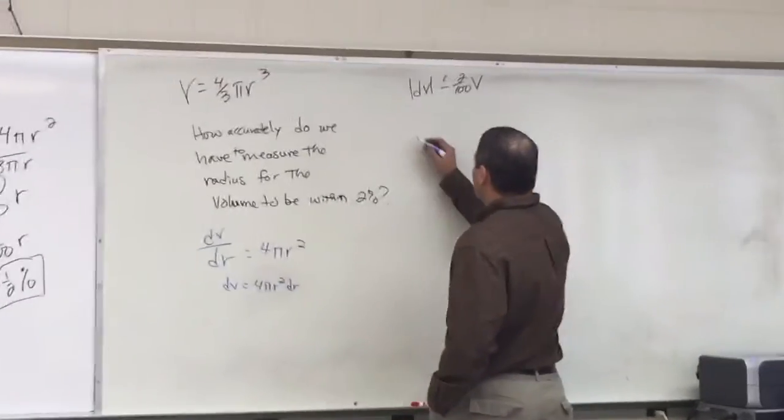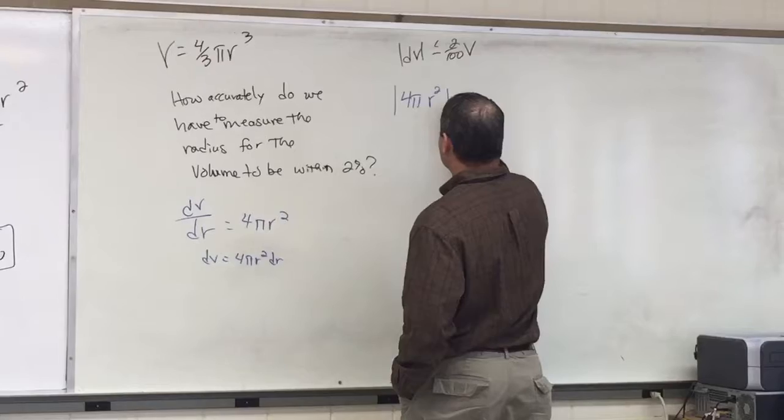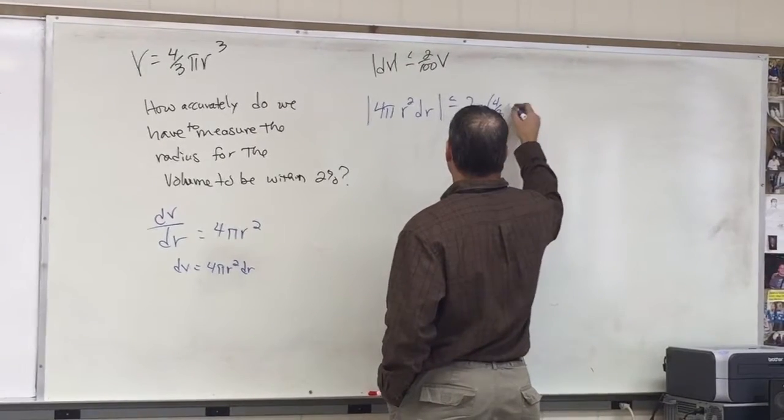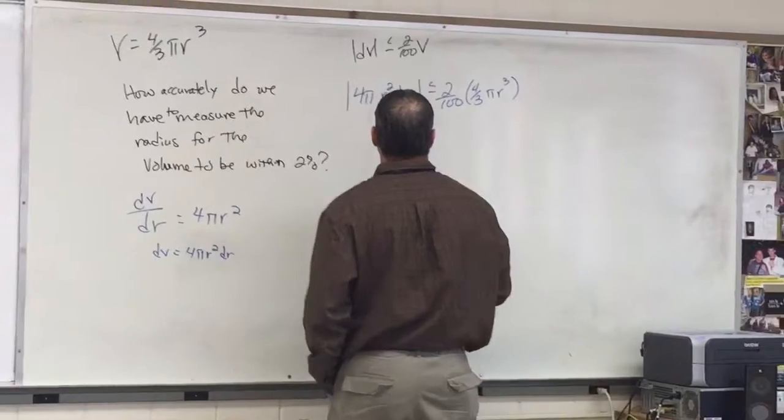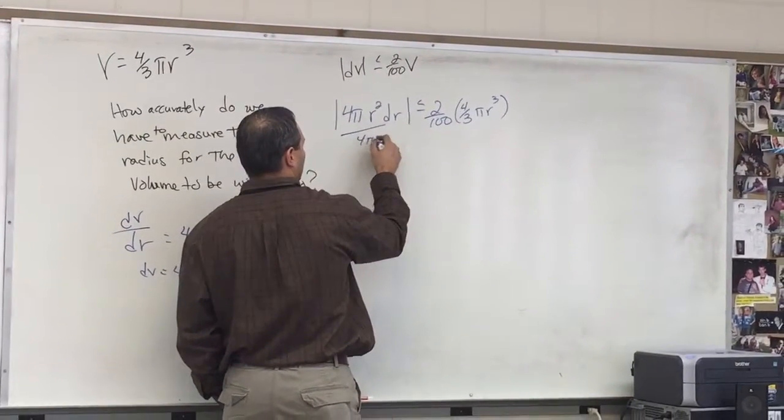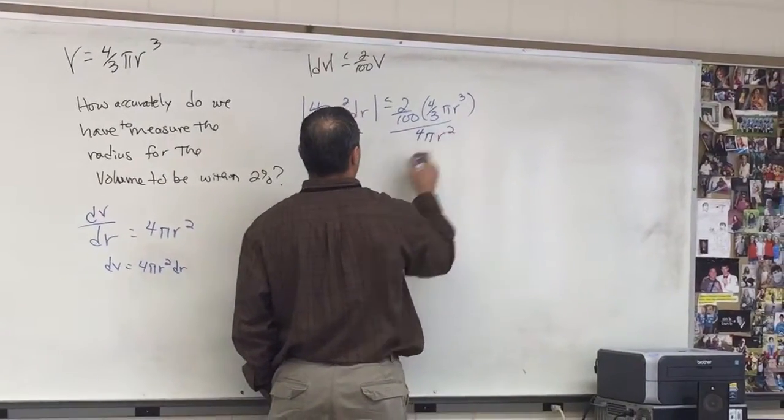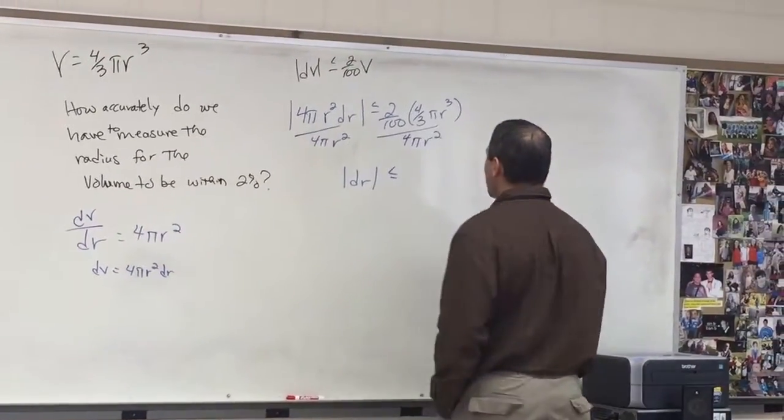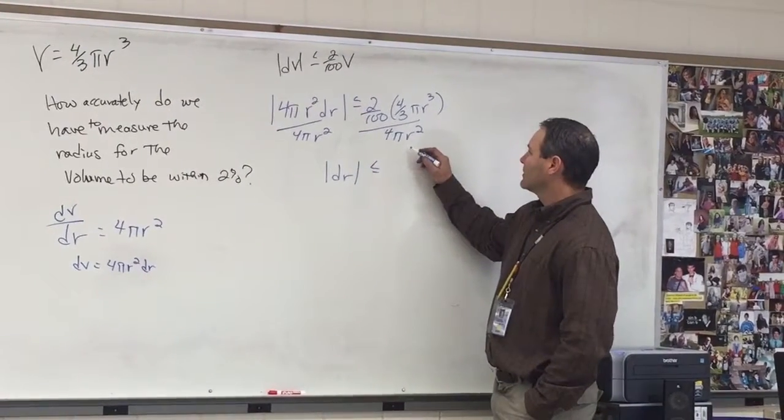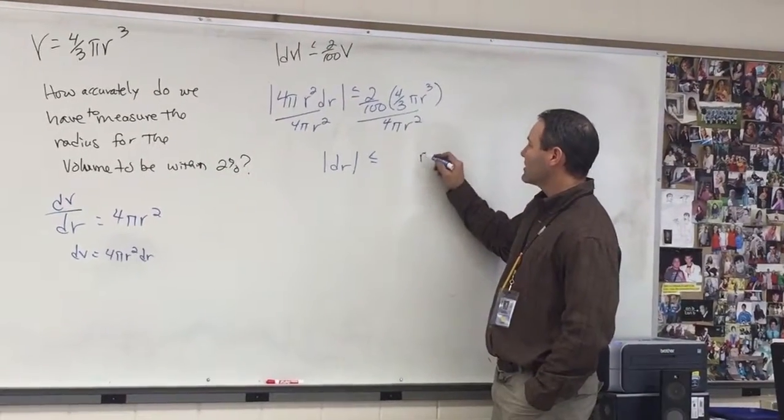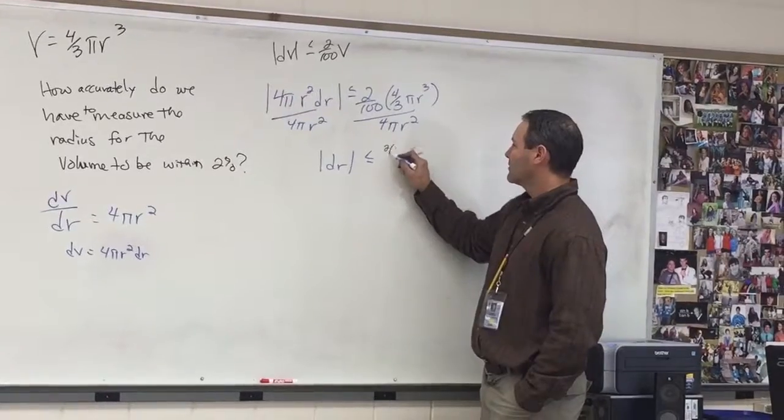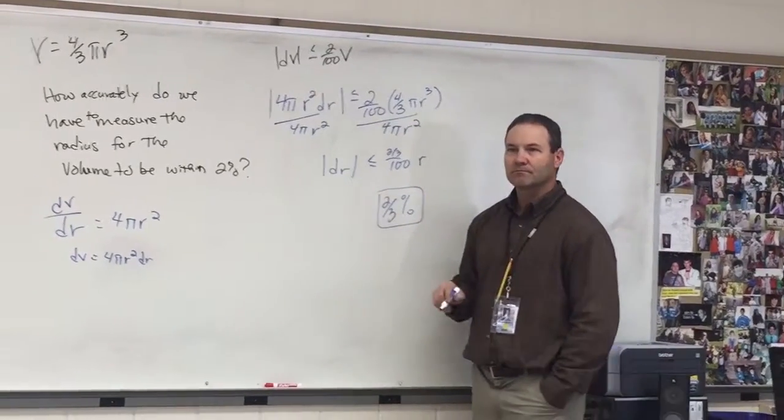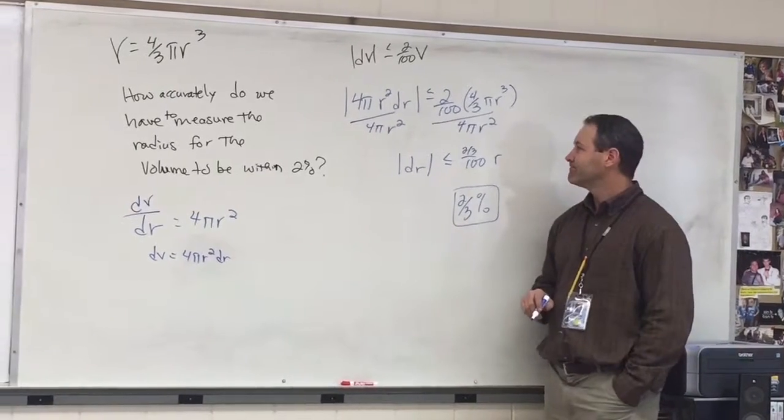So the fours cross off, fives cross off, one of the hours stays. I have two over three over 100. This is correct. So two thirds of a percent. Yeah. So then it's V over 50, which is the same as two thirds over 100, which is what it is. Does that make sense?